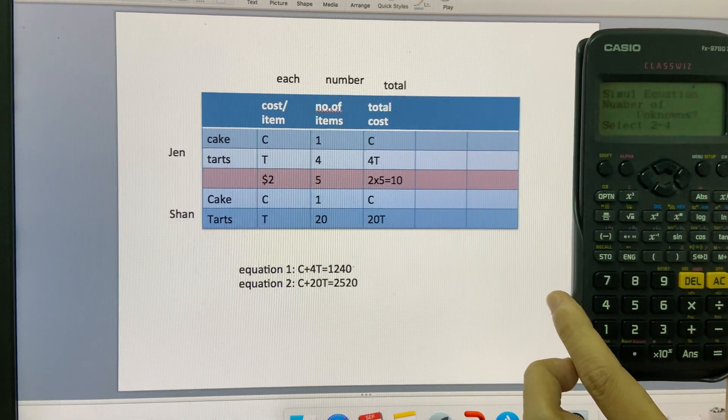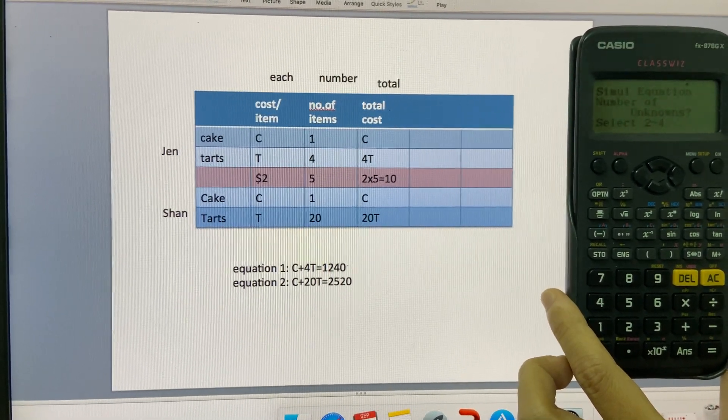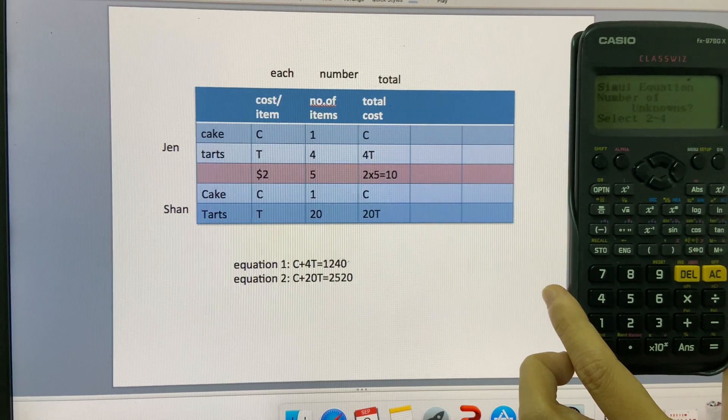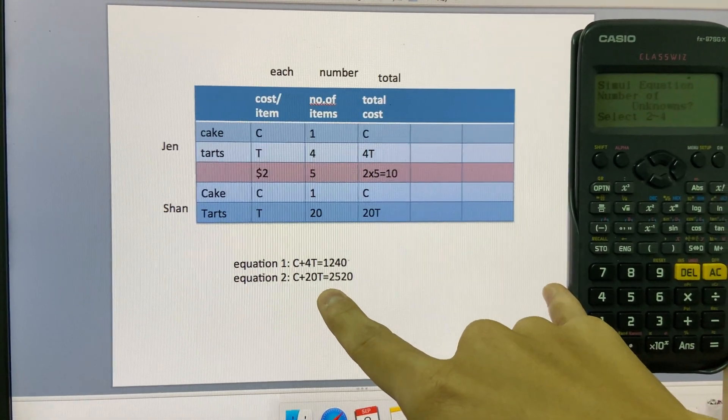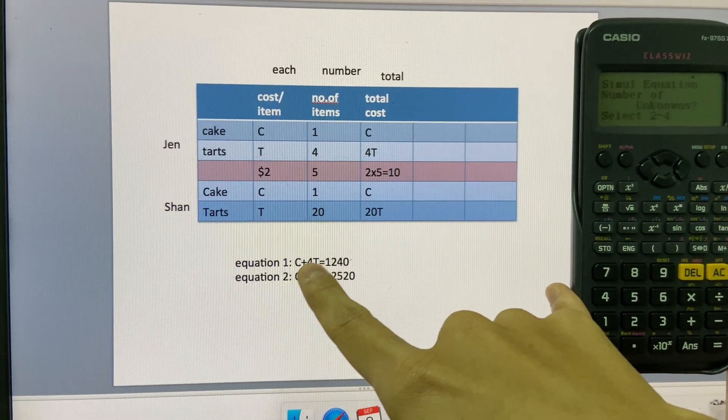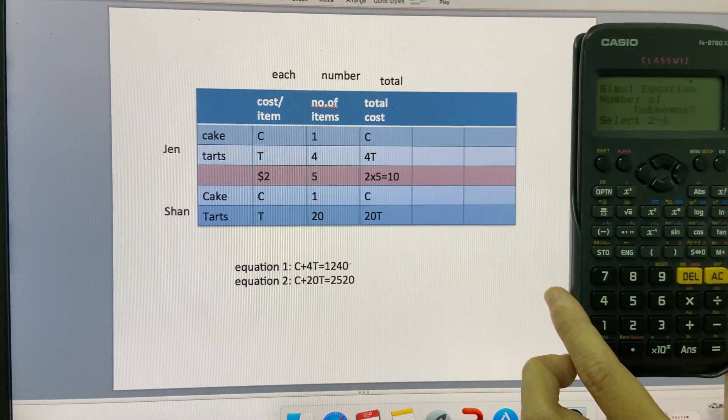We choose 1 for simultaneous equations. And of course, now they ask simultaneous equation, number of unknowns. Can you see the question? We want to find unknown C, unknown T. So basically, two unknowns. I press 2.